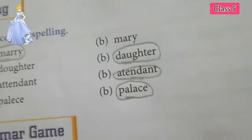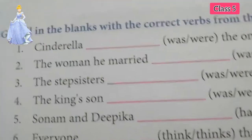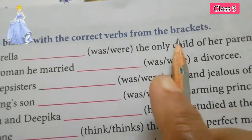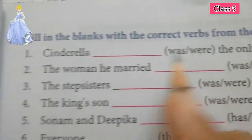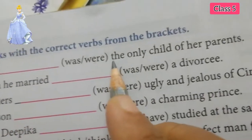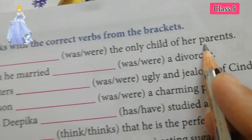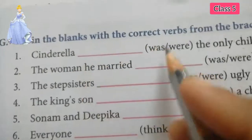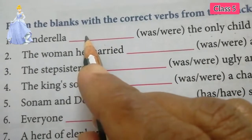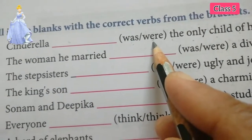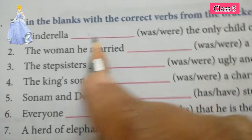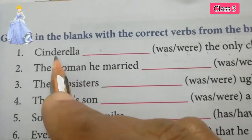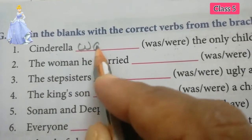Fill in the blanks with the correct verbs from the brackets. Cinderella was the only child of her parents — we write 'was', W-A-S, because Cinderella is singular. For singular we use 'was', and for plural we use 'were'.